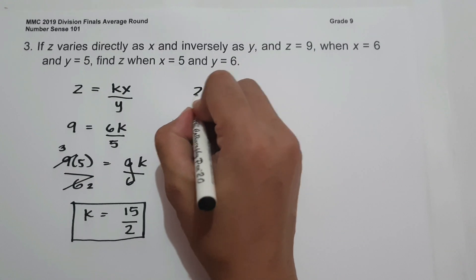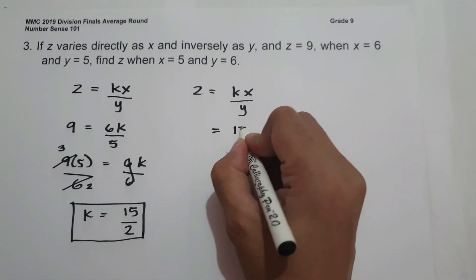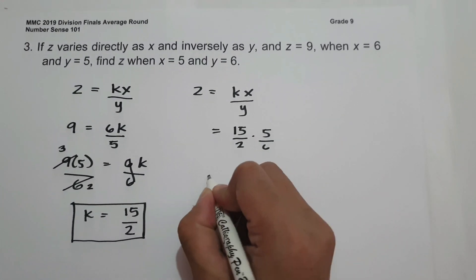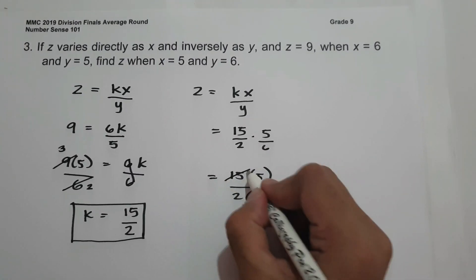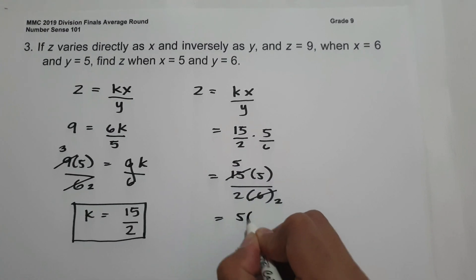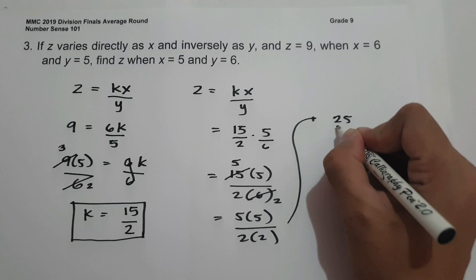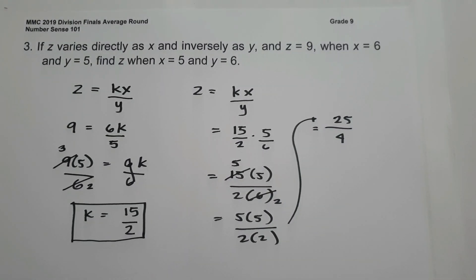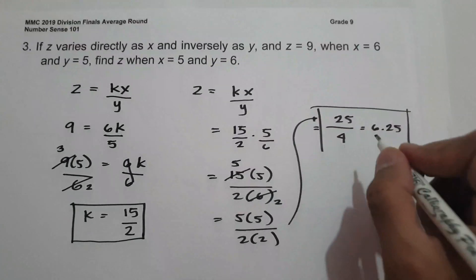Now let us find z using z equals kx over y. The value of k is 15 over 2, x is 5, and y is 6. So we have (15/2) times 5 over 6. We can cancel 15 and 6 since they are divisible by 3: 15 becomes 5 and 6 becomes 2. So this becomes 5 times 5 over 2 times 2, which is 25 over 4, or 6.25. This will be the value of z and our answer.